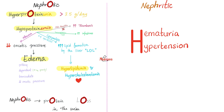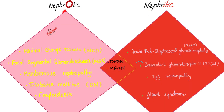In nephrotic syndrome, you lose tons of proteins. But in nephritic syndrome — 'itis' means inflammation — you lose blood because the tissue is so inflamed, and you start to get hematuria. Many nephrotic syndrome patients also have hypertension. A good kidney should maintain and regulate your blood pressure; a bad one does not. The histopathological subtypes of nephrotic syndrome include minimal change disease, focal segmental glomerulosclerosis, membranous nephropathy, diabetic nephropathy, and amyloidosis.